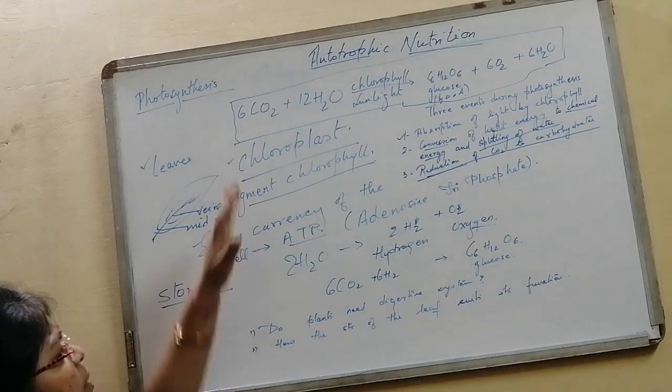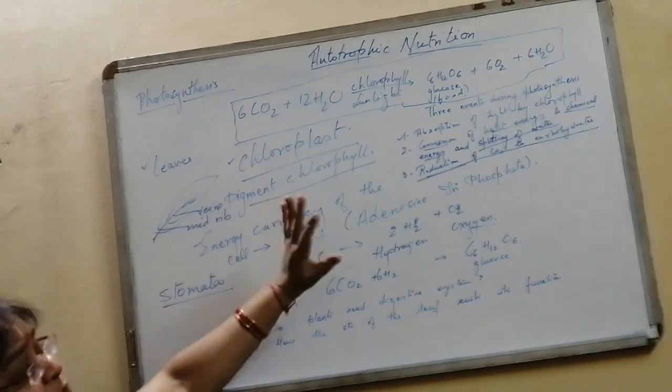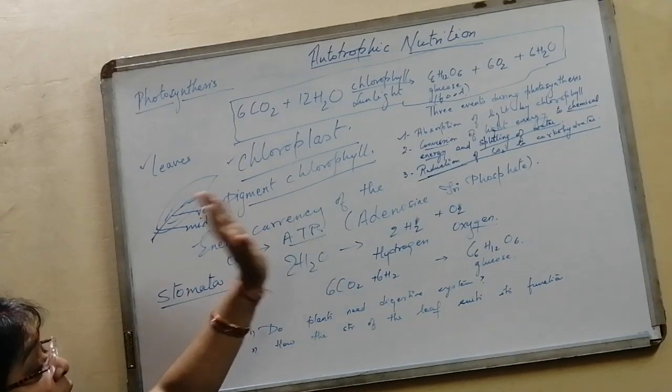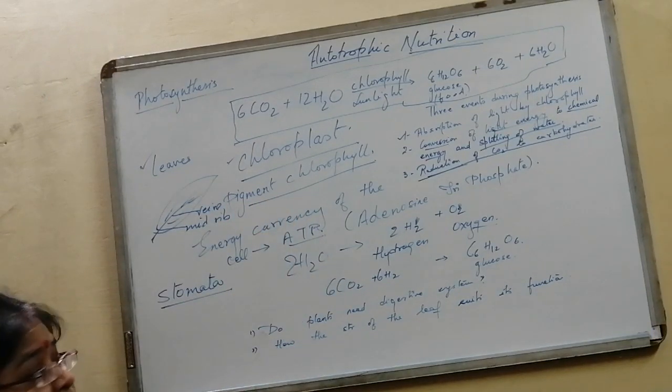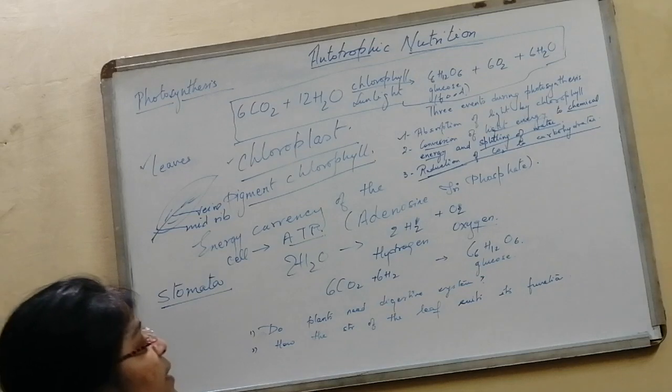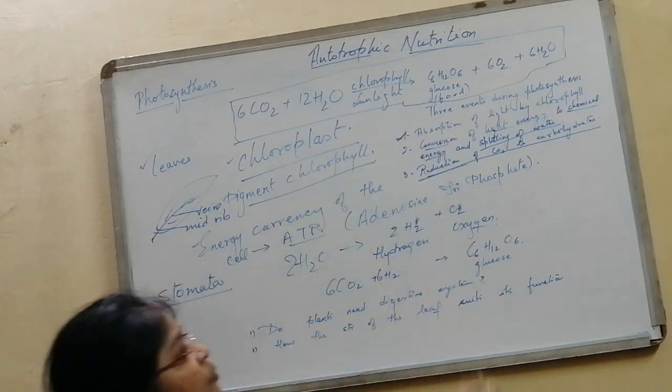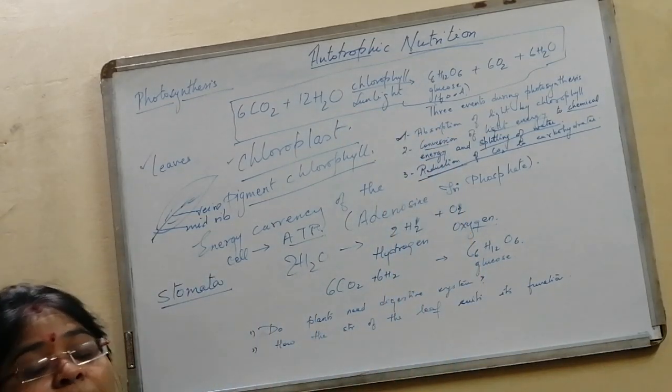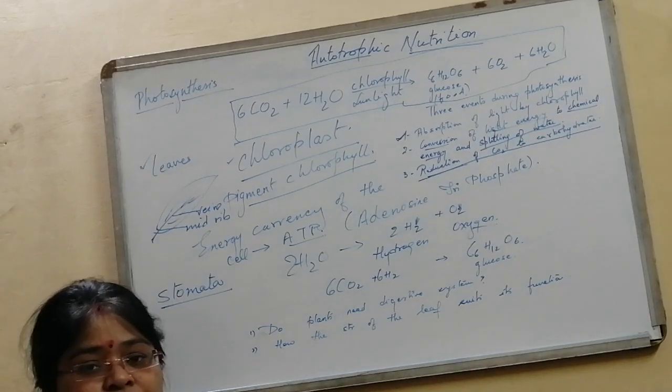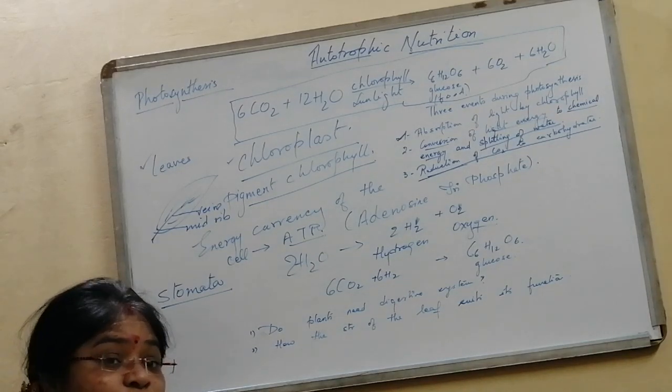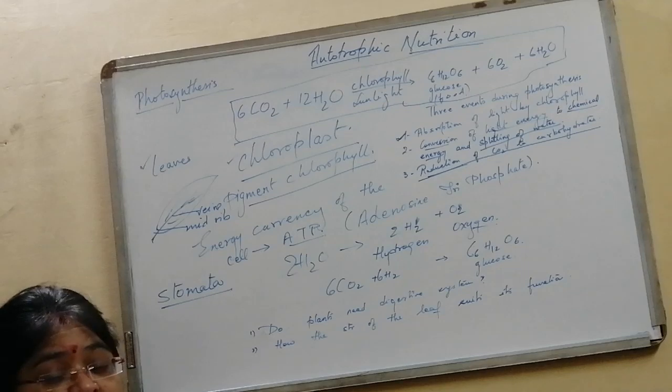Now let's see what are the major events happening during photosynthesis. First is absorption of light by chlorophyll. Light is absorbed by the chlorophyll. By this absorption of light, what is happening?